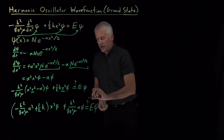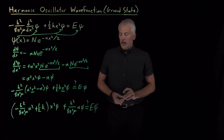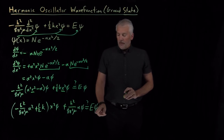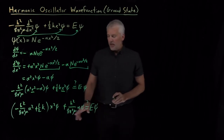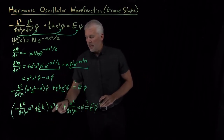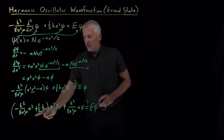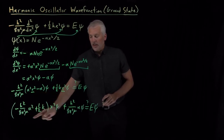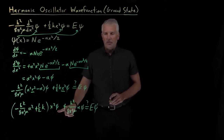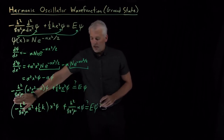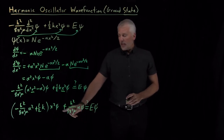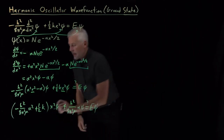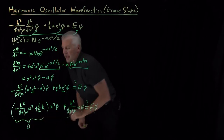So is it true that the stuff on the left equals the stuff on the right? Constants times wave function could easily equal constants times wave function if we have the appropriate value for E. But this equality is only true if the terms in parentheses cancel each other out, leaving the parenthesized expression equal to zero, so that the x squared times psi term vanishes. If this whole first term is zero, then Schrödinger's equation is satisfied.